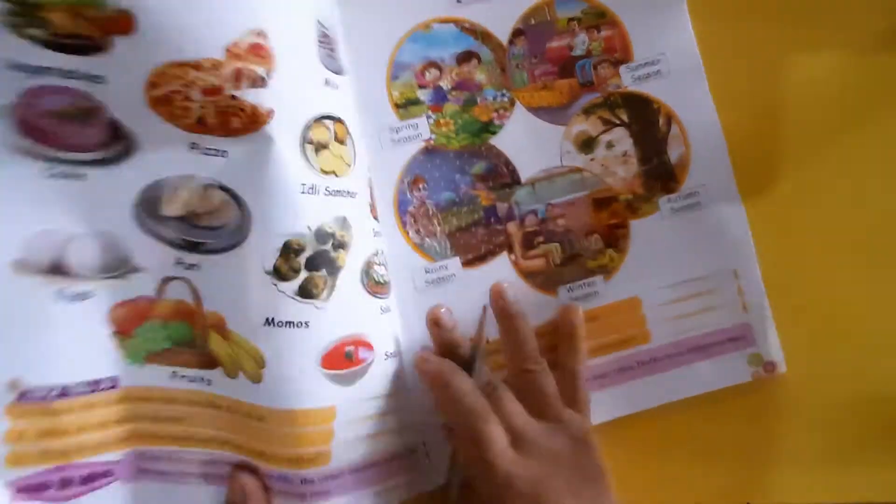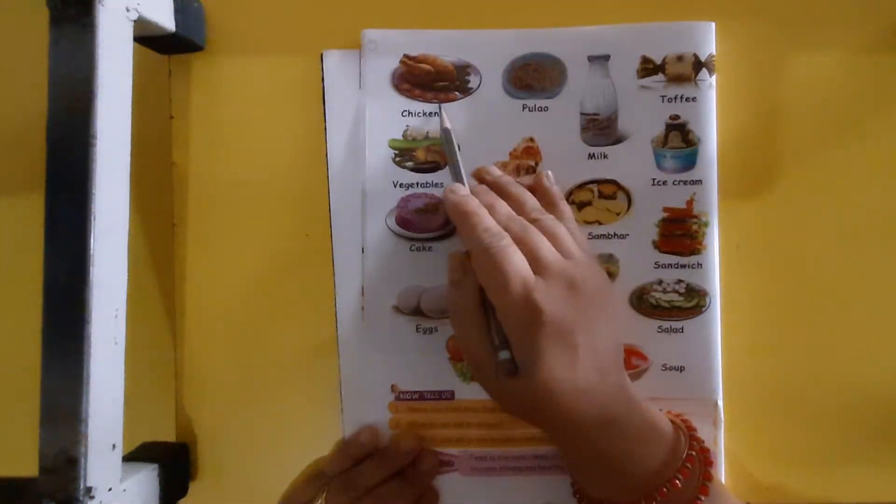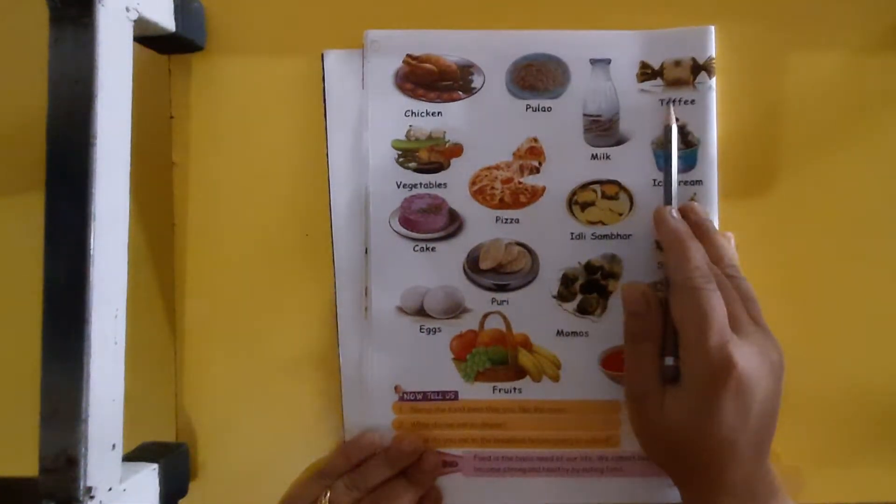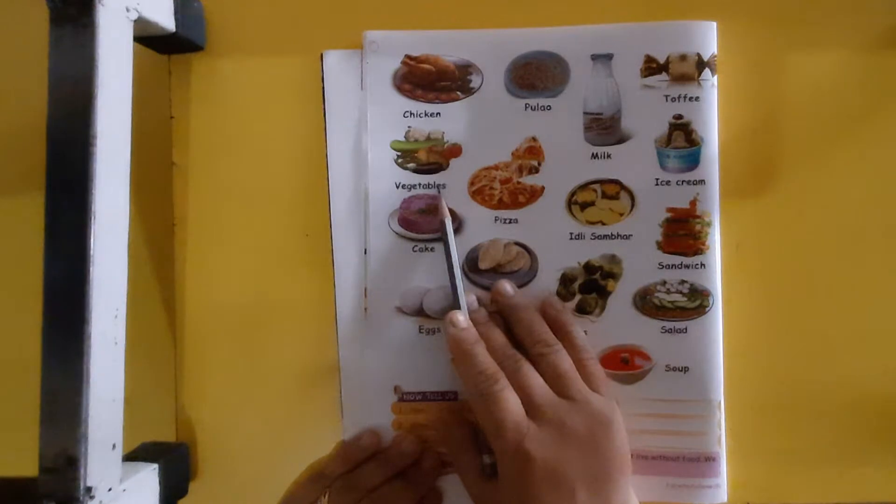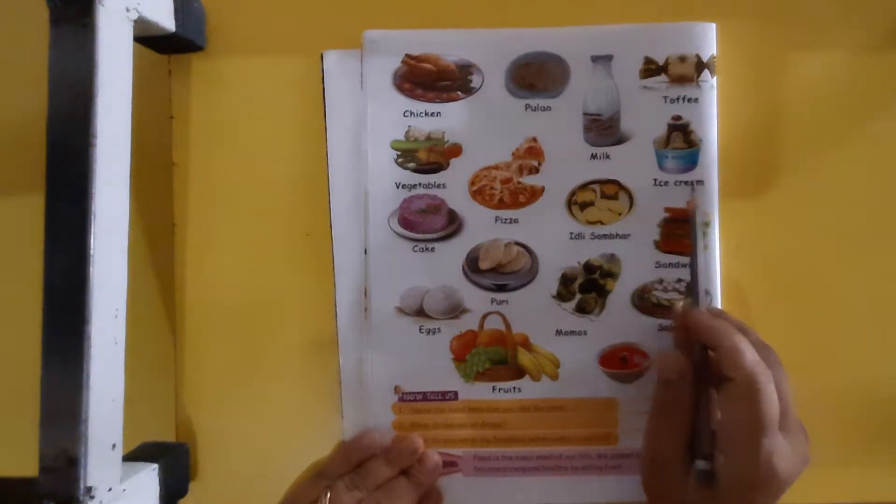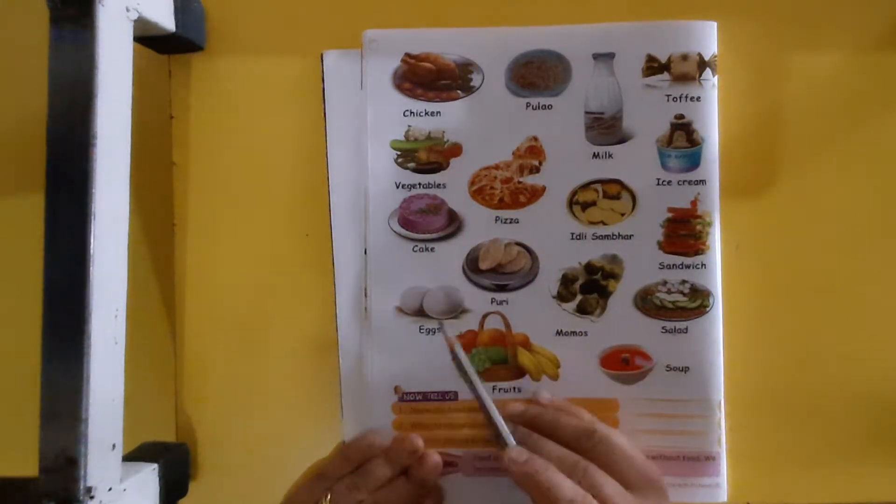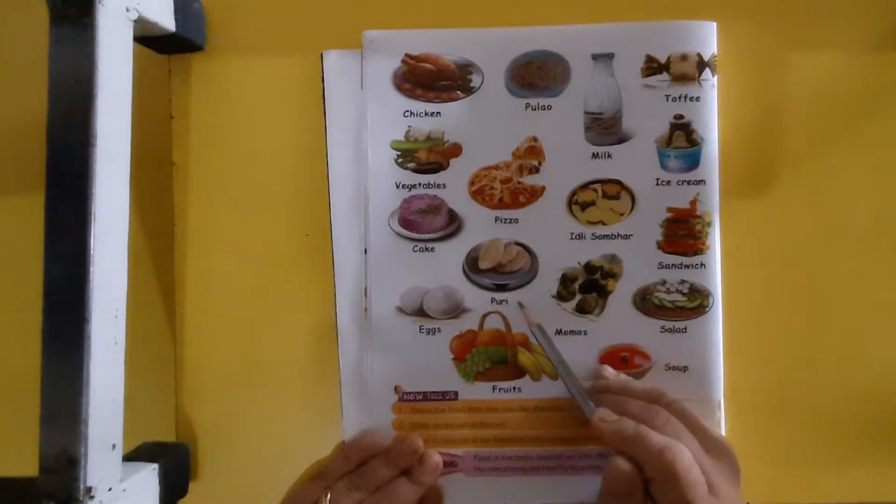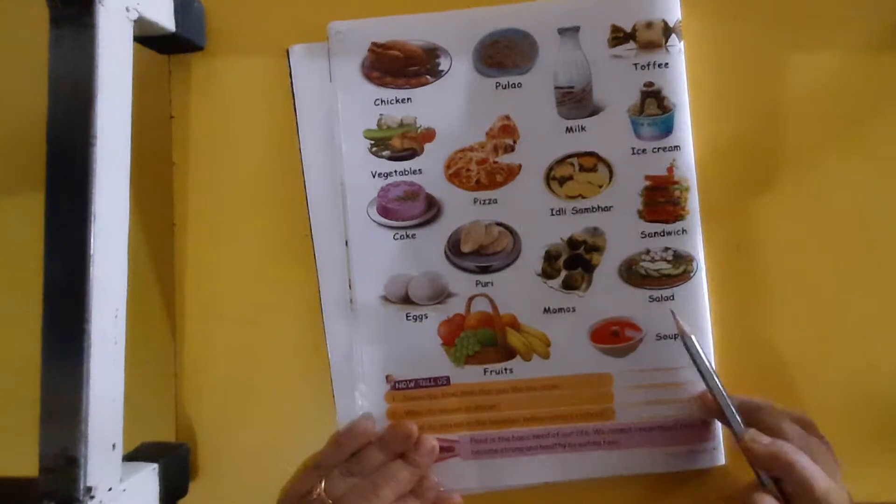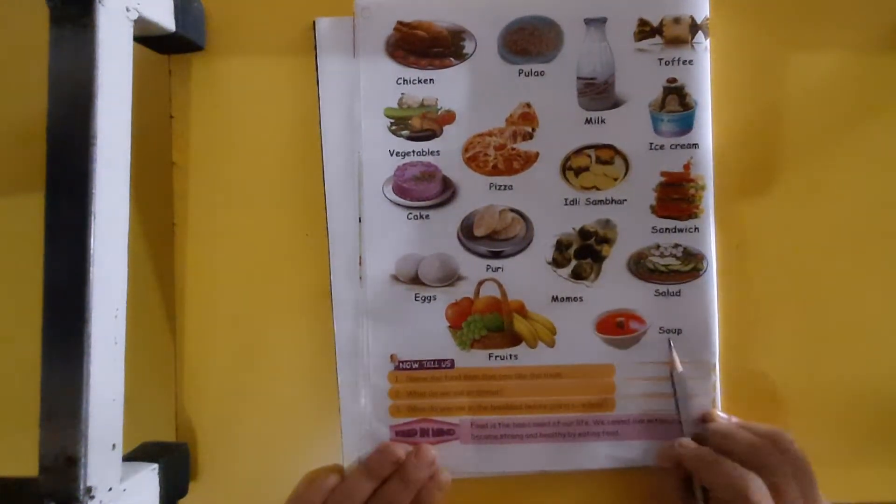Chicken, pulao, milk, toffee, vegetables, pizza, idli sambar, ice cream, cake, eggs, puri, momos, sandwich, salad, fruits, and soup.